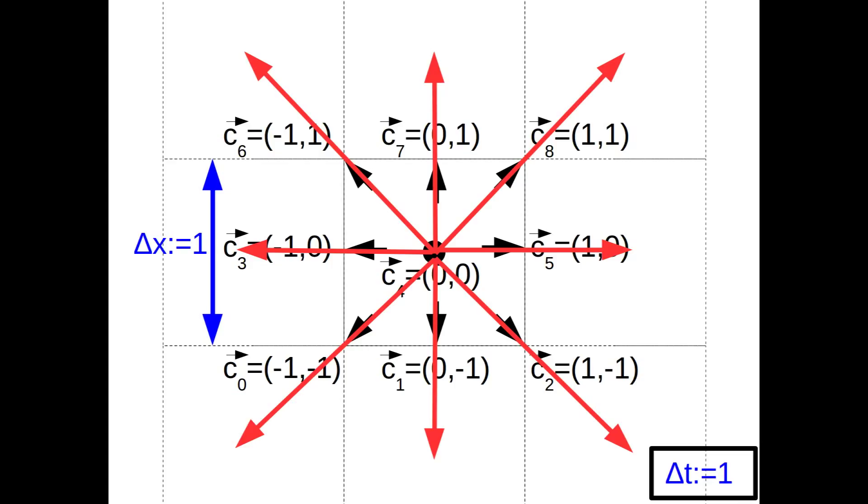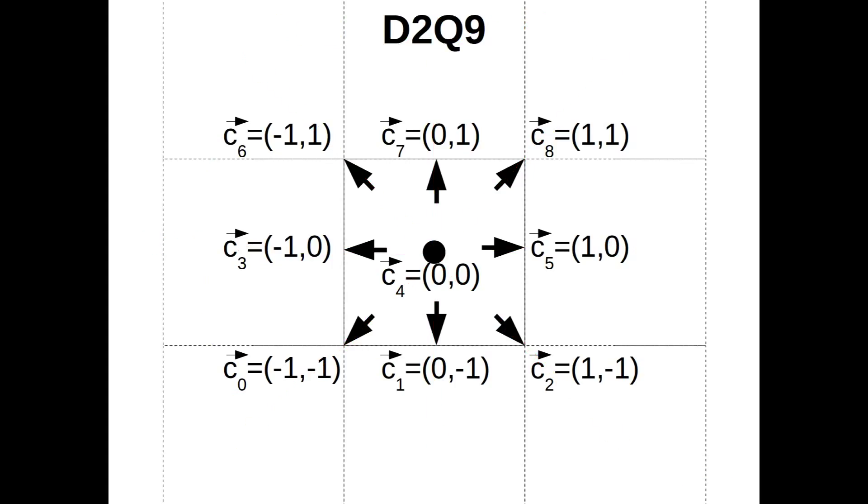The vectors C0 to C8 are called lattice velocities. This very specific case, that is, a two-dimensional grid with 9 velocity directions, is called D2Q9 discretization.